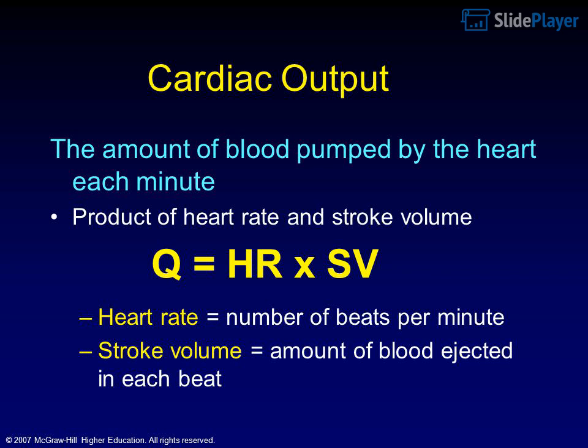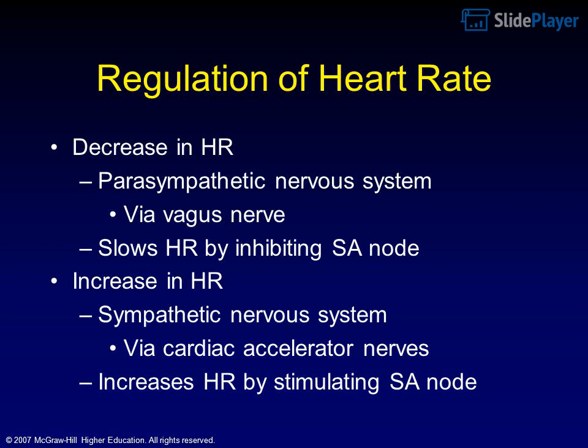Regulation of heart rate: a decrease in HR is mediated by the parasympathetic nervous system via the vagus nerve, which slows HR by inhibiting the SA node. An increase in HR is mediated by the sympathetic nervous system via cardiac accelerator nerves, which increase HR by stimulating the SA node. Nervous system regulation of heart rate is shown in Figure 9.11.